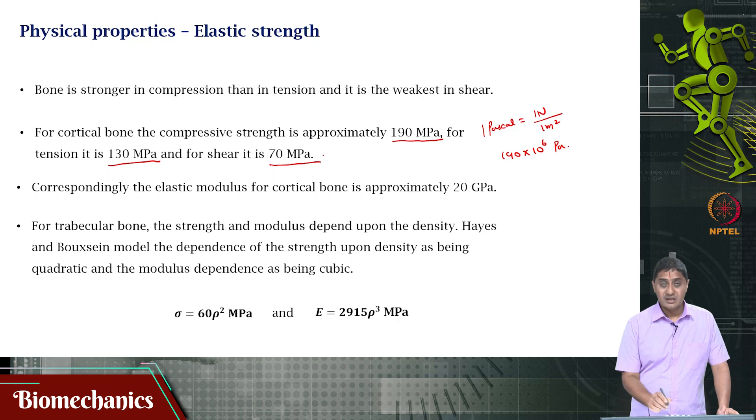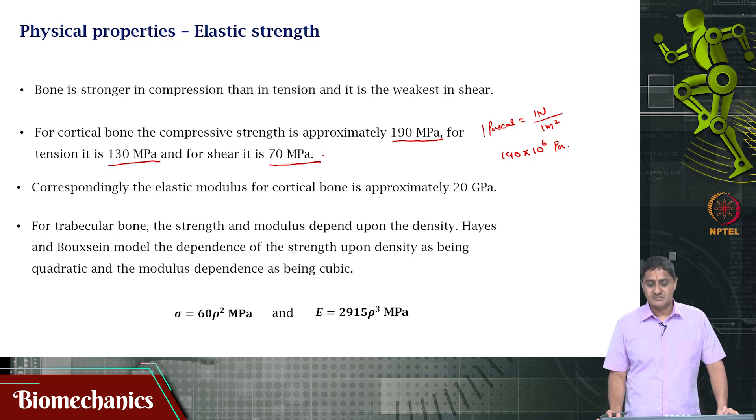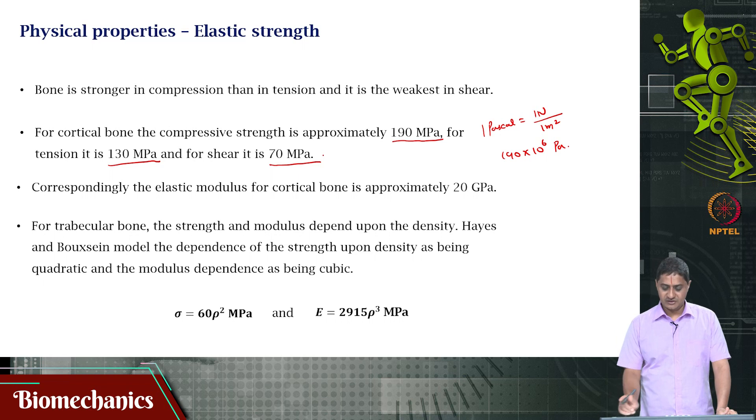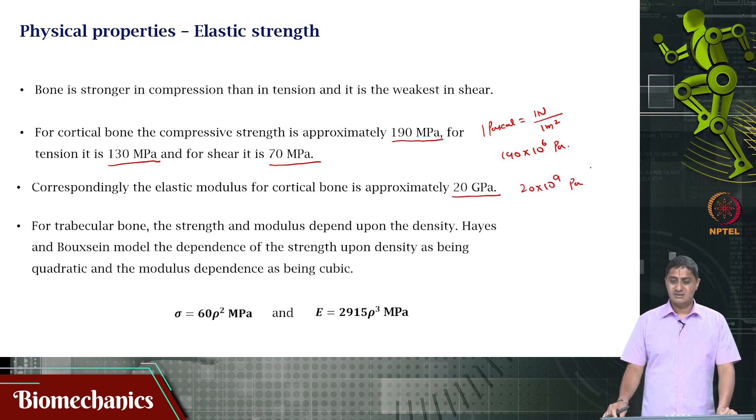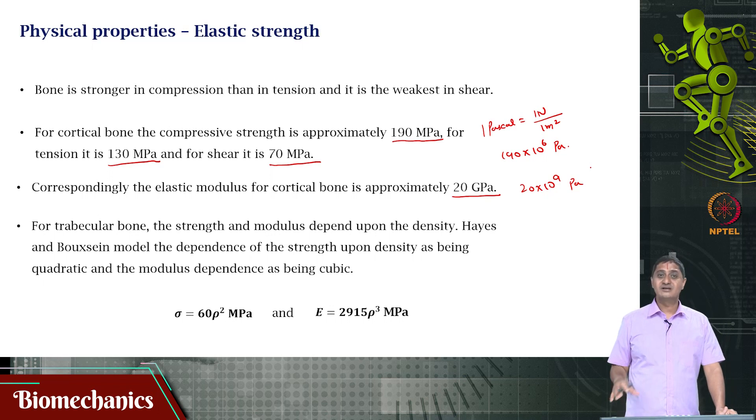For shear, it is almost one-third of the strength it has in compressive direction. Its shear strength is very weak, much weaker than the compressive strength. The elastic modulus for cortical bone is about 20 gigapascals, that is 20 times 10 to the power 9 pascals. Remember, kilo is 10 power 3, mega is 10 power 6, giga is 10 power 9.